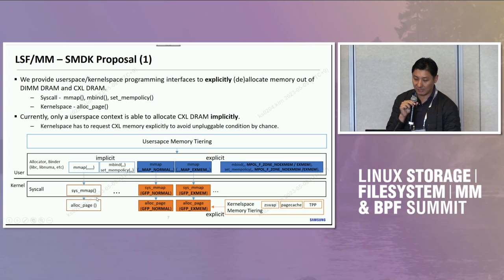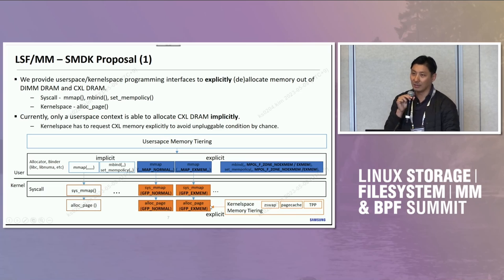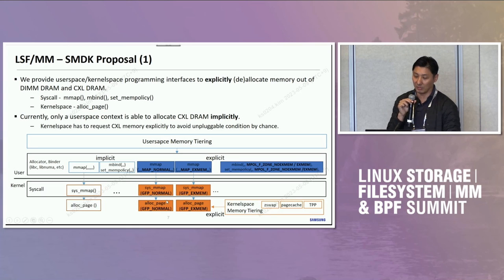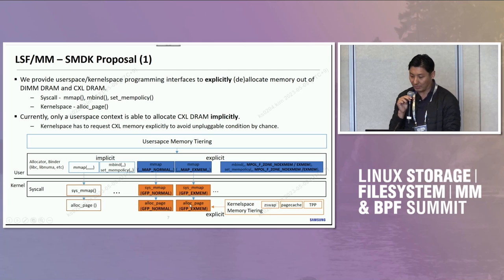Inside kernel space, we only allow explicit allocation requests to CXL memory. The reason for this is the third requirement: to avoid an unpluggable condition by chance. When the kernel allocates CXL memory implicitly, and the data is kernel metadata, it could make the CXL memory unpluggable. So we allow kernel space to access CXL memory only when it explicitly requests CXL memory. Let me move on to the next requirement.